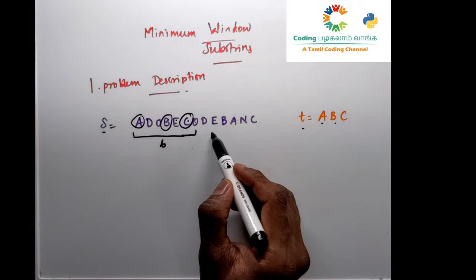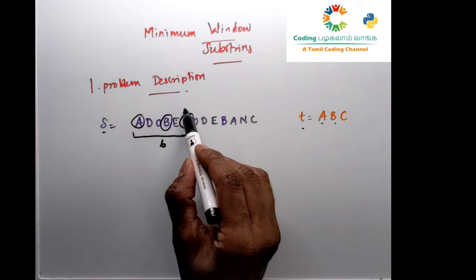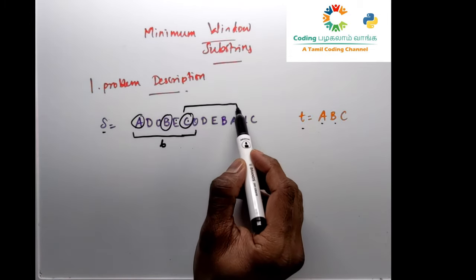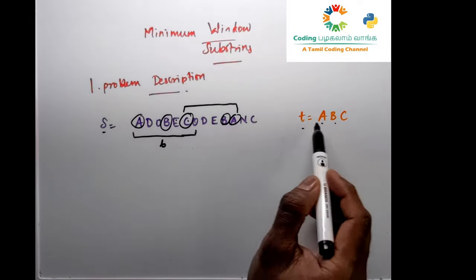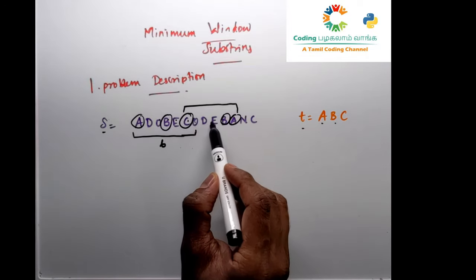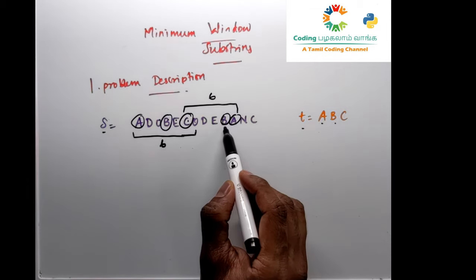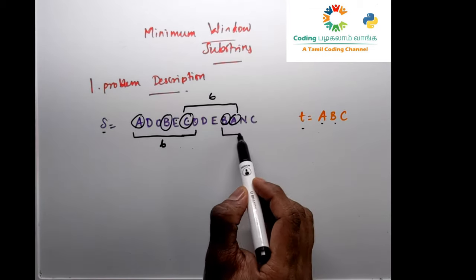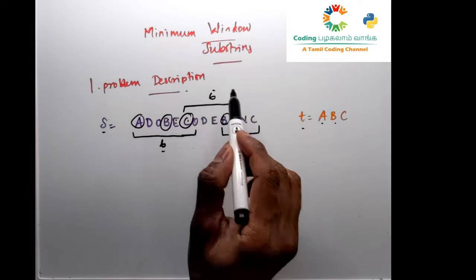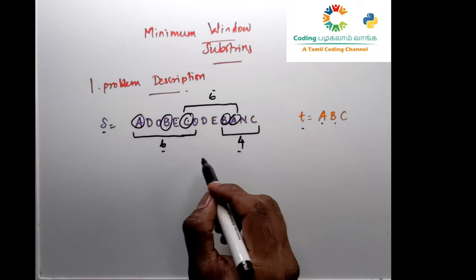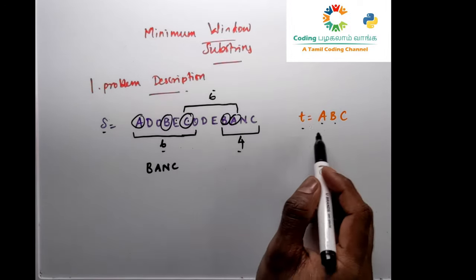So we have a window of 6 characters containing A, B, and C. Another combination — taking C, then B, then A — also gives us 3 characters in a window of length 6. But another combination with B, A, and C has a length of only 4. So obviously, this length-4 window is our minimum length substring. The output is B, A, C — the minimum length substring that has all the characters of T.